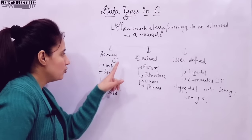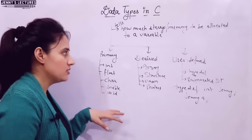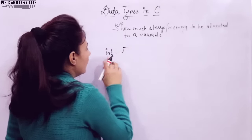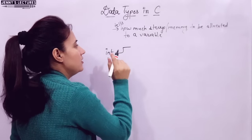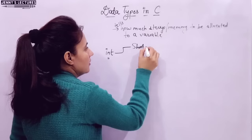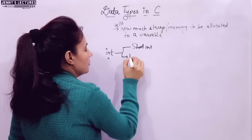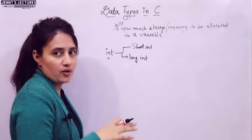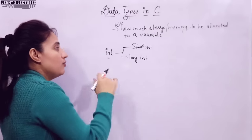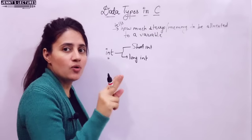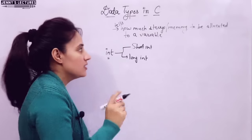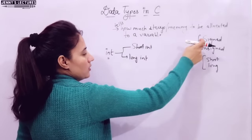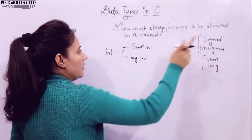So now in this video, I'm going to discuss primary data types — what they are, why we use them, and the storage they need. First, let us say int. Int is also further categorized into short int and long int. Short and long are size modifiers or qualifiers. We also have sign qualifiers: unsigned and signed. So these two types of qualifiers are there — size qualifier: short and long — and sign modifier: signed and unsigned.